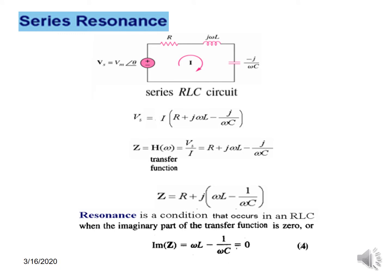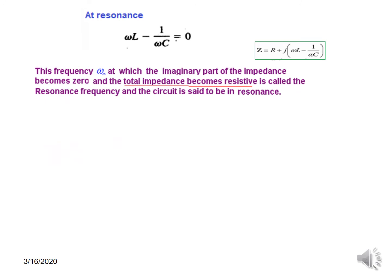For resonance to occur, the imaginary term — that is Im(Z), which equals ωL − 1/ωC — has to be zero. This is the condition for resonance. When this term becomes zero, the impedance is purely resistive.